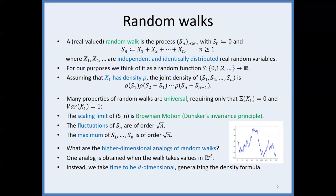A random walk is the process S_n, which is just a sum of i.i.d. independent identically distributed real random variables. I think of it as a function with linear interpolation between the points. Because the random variables are independent and identically distributed, if the increment X has a density, then the whole random walk has a density that takes a product form: rho of the gradient S_n minus S_{n-1}. We will later generalize this density formula.